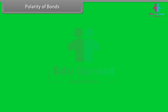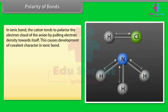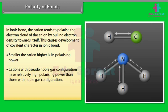In an ionic bond, the cation tends to polarize the electron cloud of the anion by pulling electron density towards itself, causing development of covalent character in the ionic bond. Smaller the cation, higher is its polarizing power. Cations with pseudo-noble gas configuration have relatively higher polarizing power than those with noble gas configuration. Larger the size of the anion, higher is its polarizability.